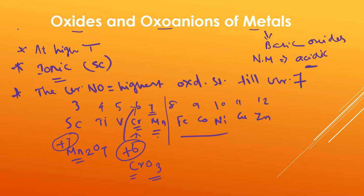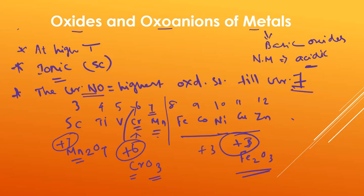But after group 7, beyond group 7, the common oxidation state is +3. For example, Fe₂O₃ — here the oxidation state is +3. So the key point: till group 7, the highest oxidation state equals the group number; but beyond group 7, it is commonly +3.